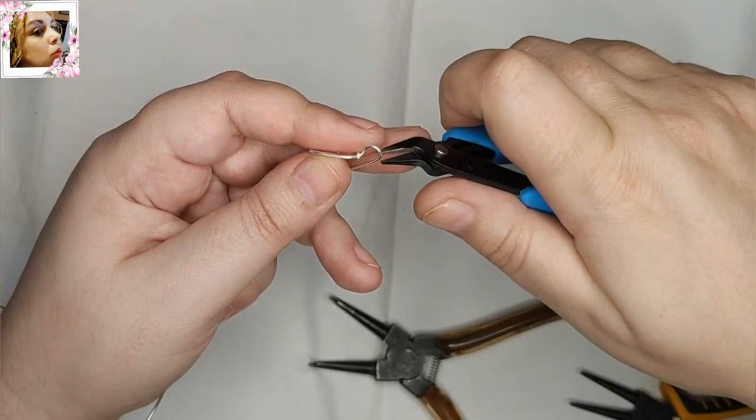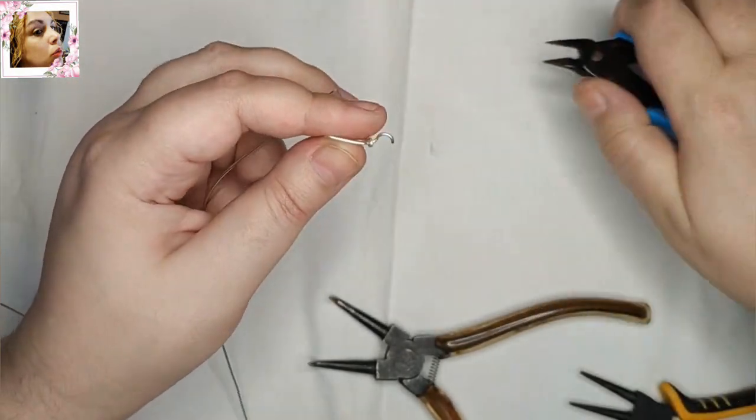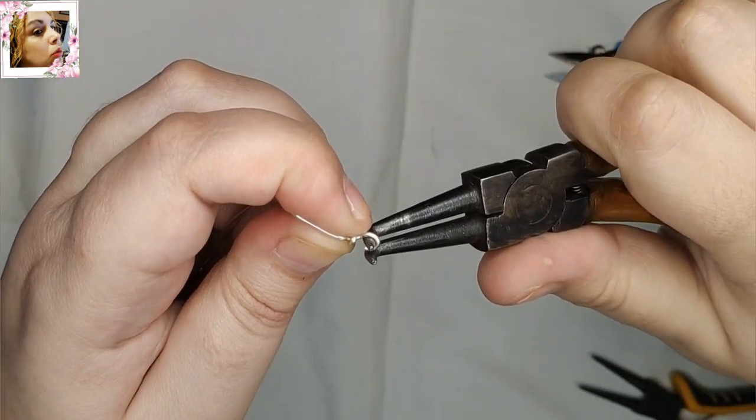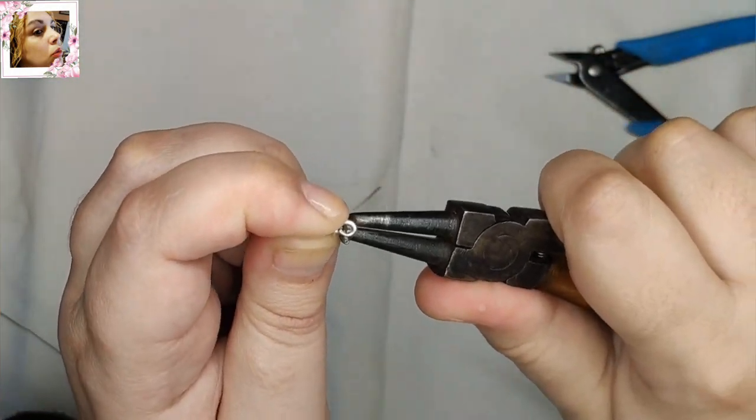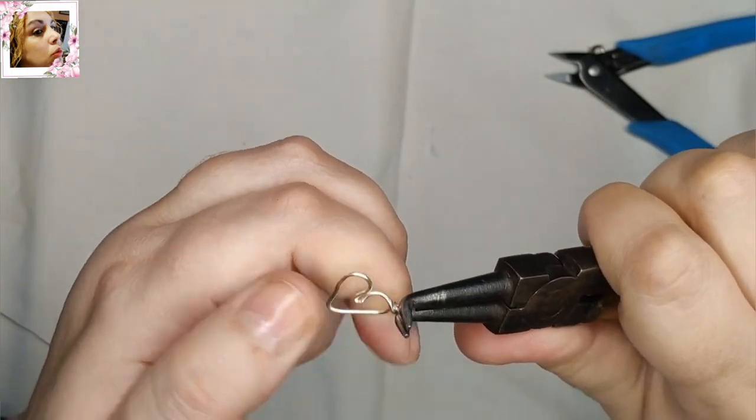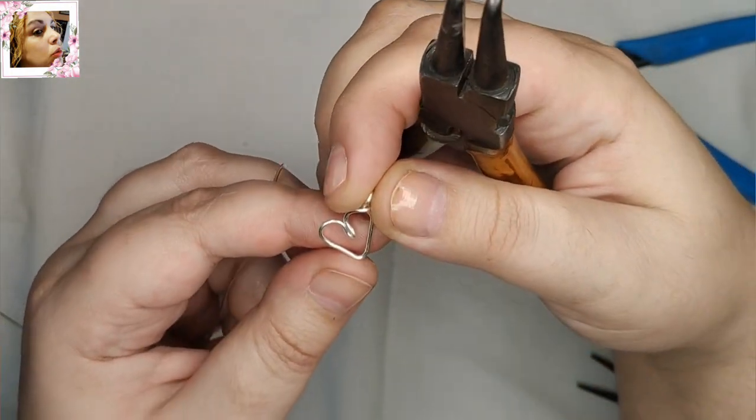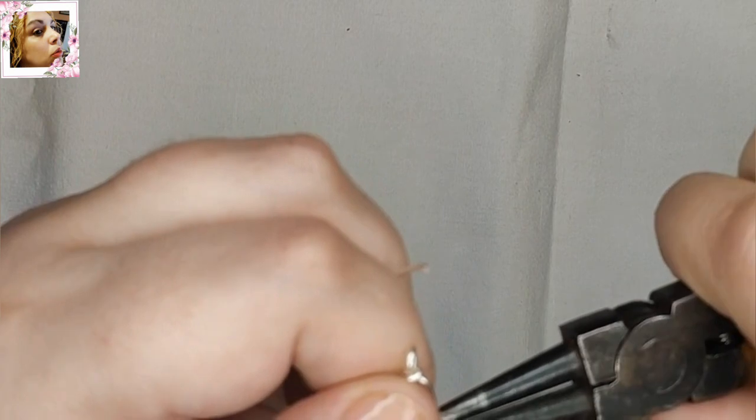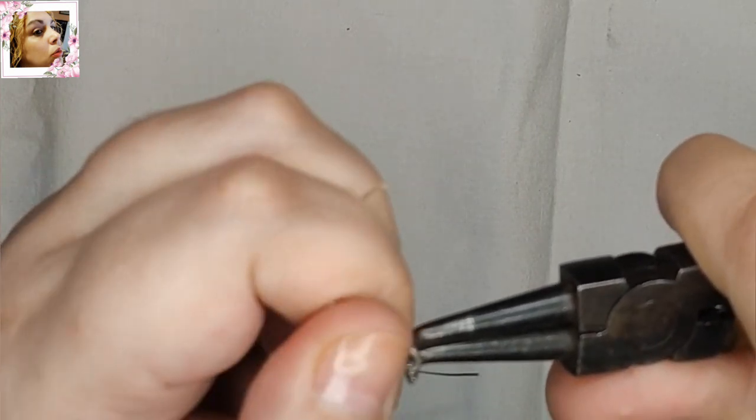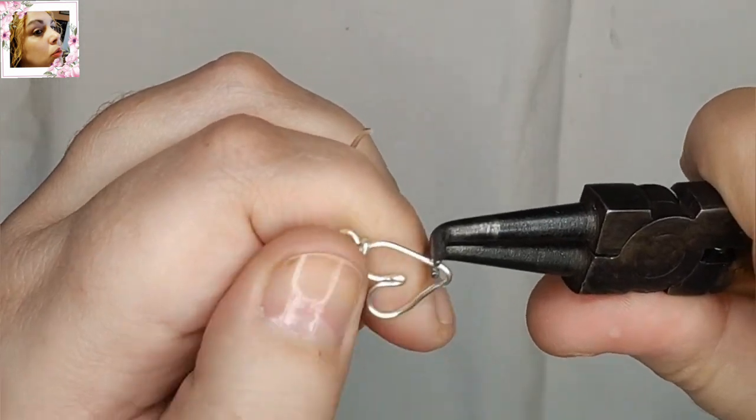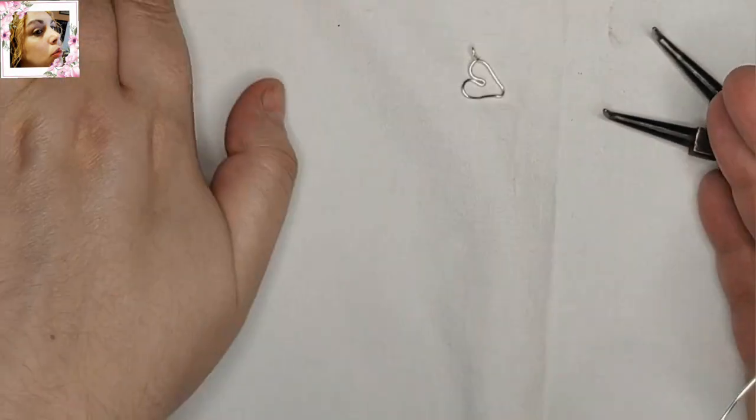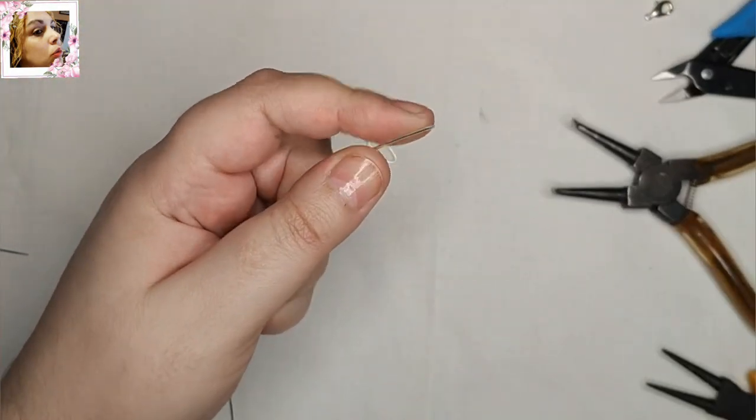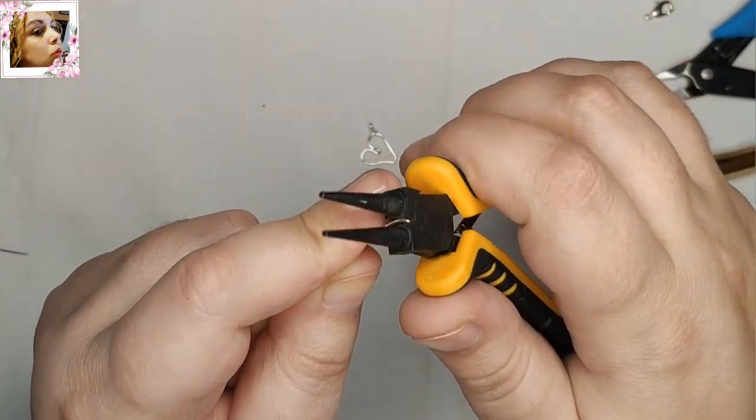Ya no se va a ir. Y ahora hacemos un engarce en forma de cruz con respecto a la pieza. Estos corazones nos van a servir para pendientes, collar, para lo que necesite cada uno, para colgantito de pulsera por ejemplo. Y podéis, como ya os he comentado antes de comenzar, podéis colocarle avalorio. Voy a hacer el pico así un poco doblado o más acusado. Vamos a hacer otro.